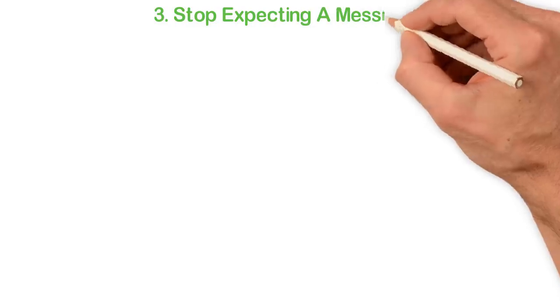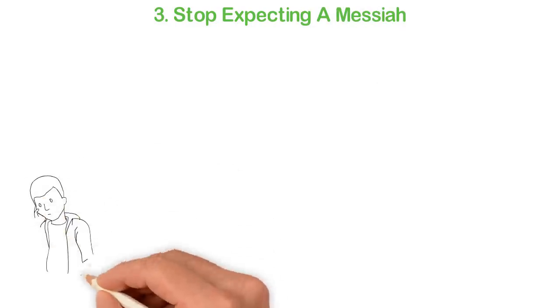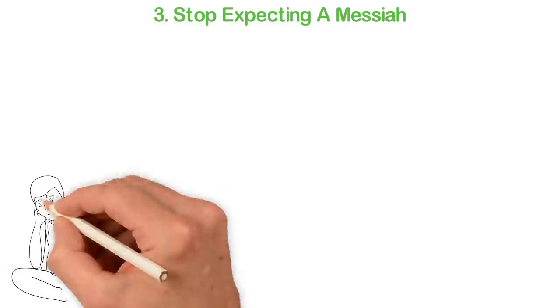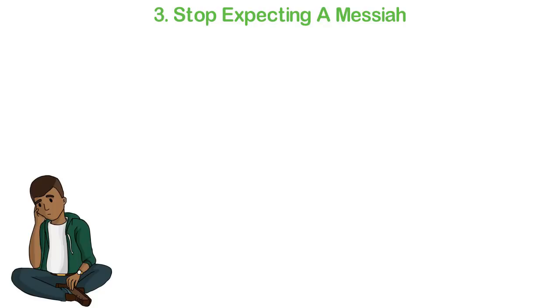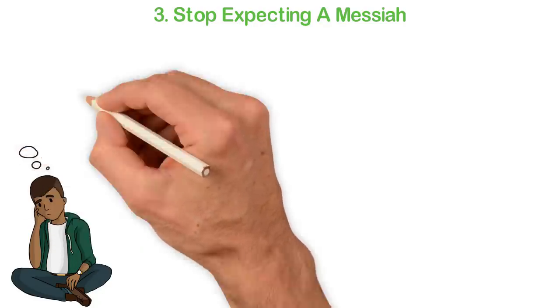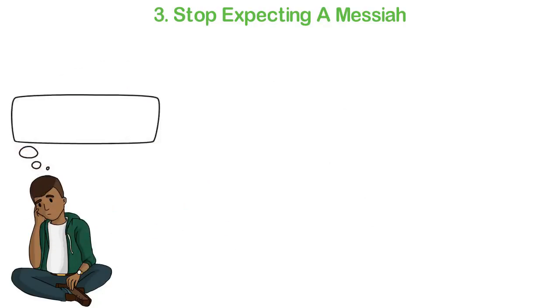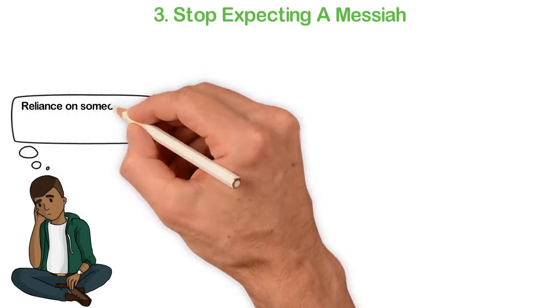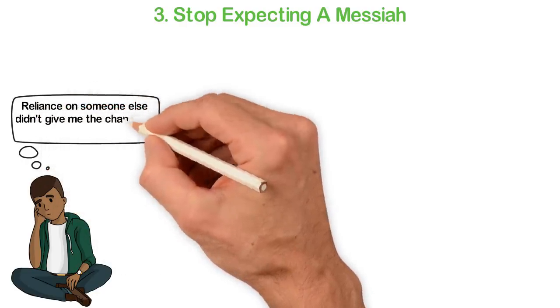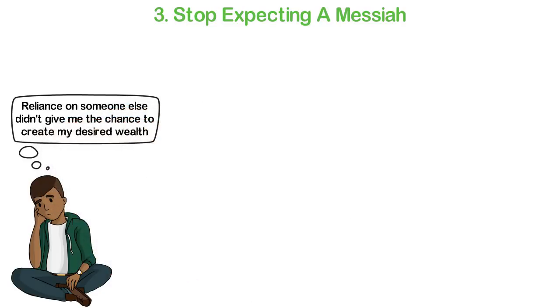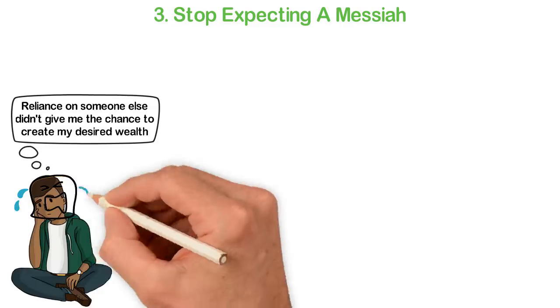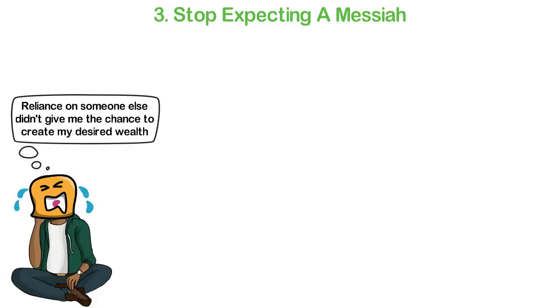Third, stop expecting a messiah. We were all trained to expect a messiah—someone to give us a job, someone to fix our roads, economy and life, someone to take care of us when we are old and other things. Well, if you really want to be a successful entrepreneur, you have to stop expecting someone else to fix your life. You don't only have to be independent, you have to become a messiah.